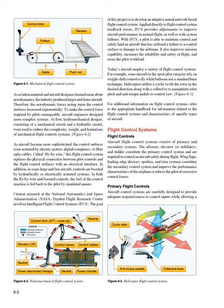As aviation matured and aircraft became larger and faster, aerodynamic forces on control surfaces increased exponentially. To make control forces manageable, engineers designed more complex systems. First, hydromechanical designs—consisting of a mechanical circuit and a hydraulic circuit—were used to reduce the complexity, weight, and limitations of mechanical systems. As aircraft became more sophisticated, control surfaces were actuated by electric motors, digital computers, or fiber-optic cables.